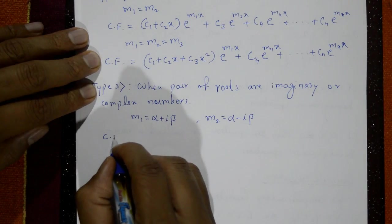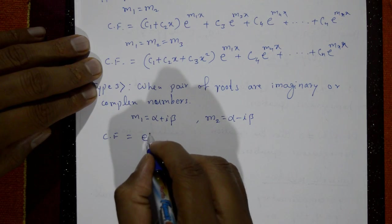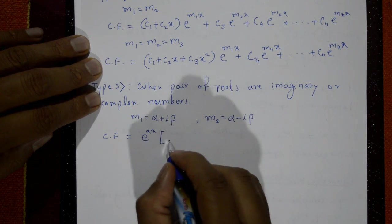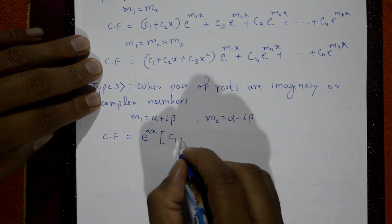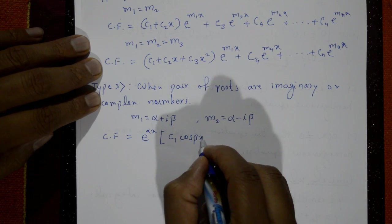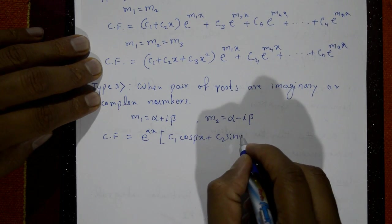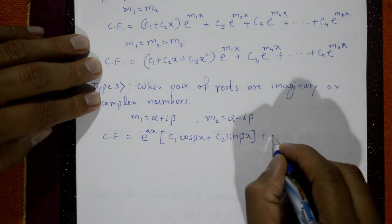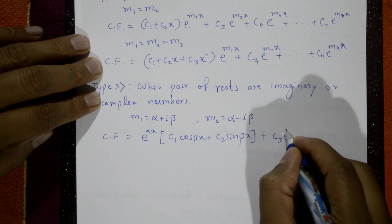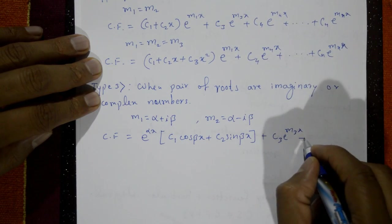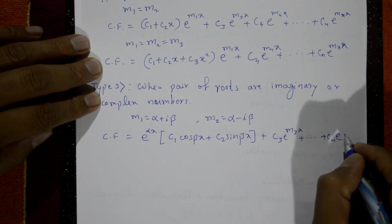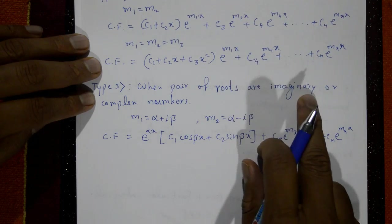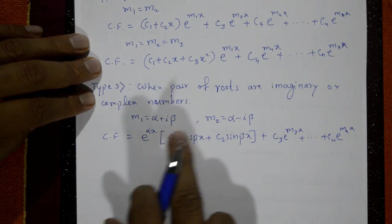The complementary function is e^(αx)·(c1·cos(βx) + c2·sin(βx)) for the two complex roots. The remaining distinct roots contribute c3·e^(m3·x) + ... + cn·e^(mn·x). This is the form when two roots are imaginary or complex numbers.